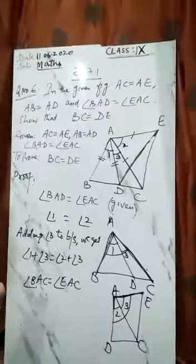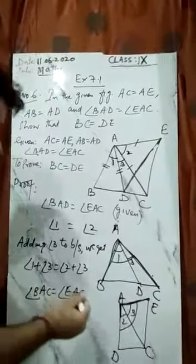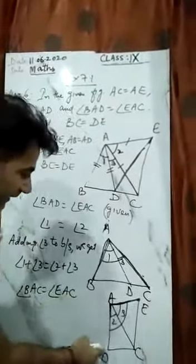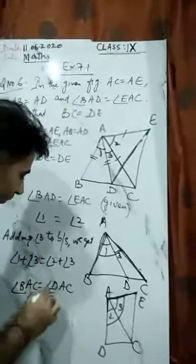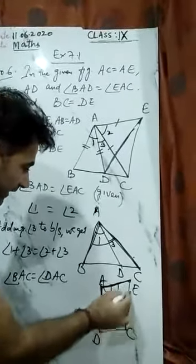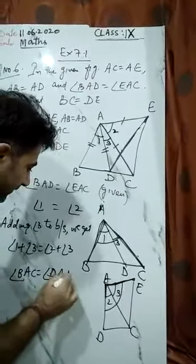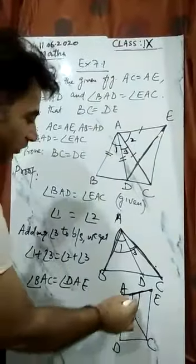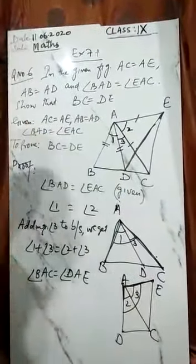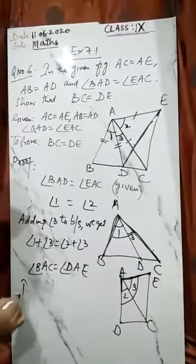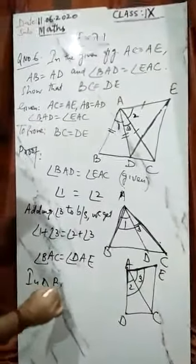Or you can call it DAC or DAE. You can write it as DAC. Sorry, DAE. This whole combined angle becomes DAE. So 2 and 3 together make DAE.